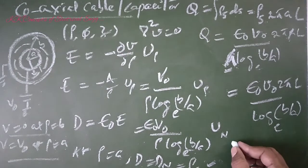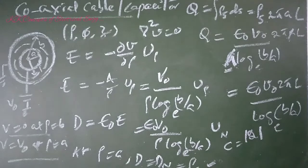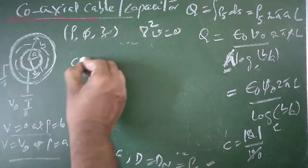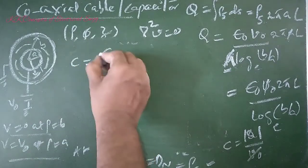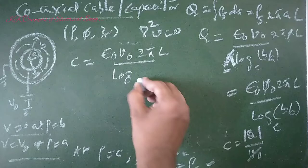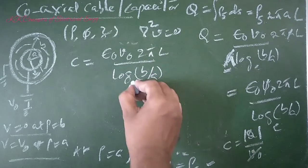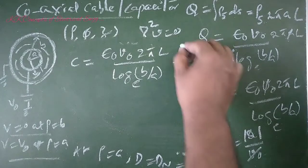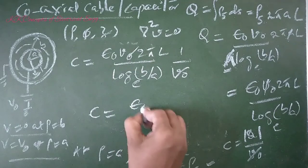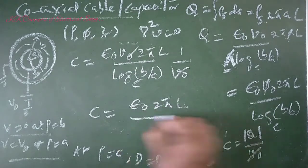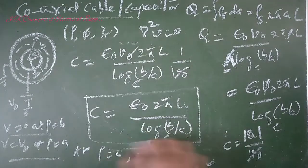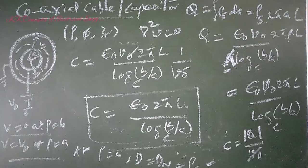Capacitance C equals magnitude of charge divided by V₀. C equals Q, which is ε₀V₀ 2πL divided by log(B/A), divided by V₀. V₀ cancels, so C equals ε₀ 2πL divided by log(B/A). This is the capacitance of the coaxial cable in farads.